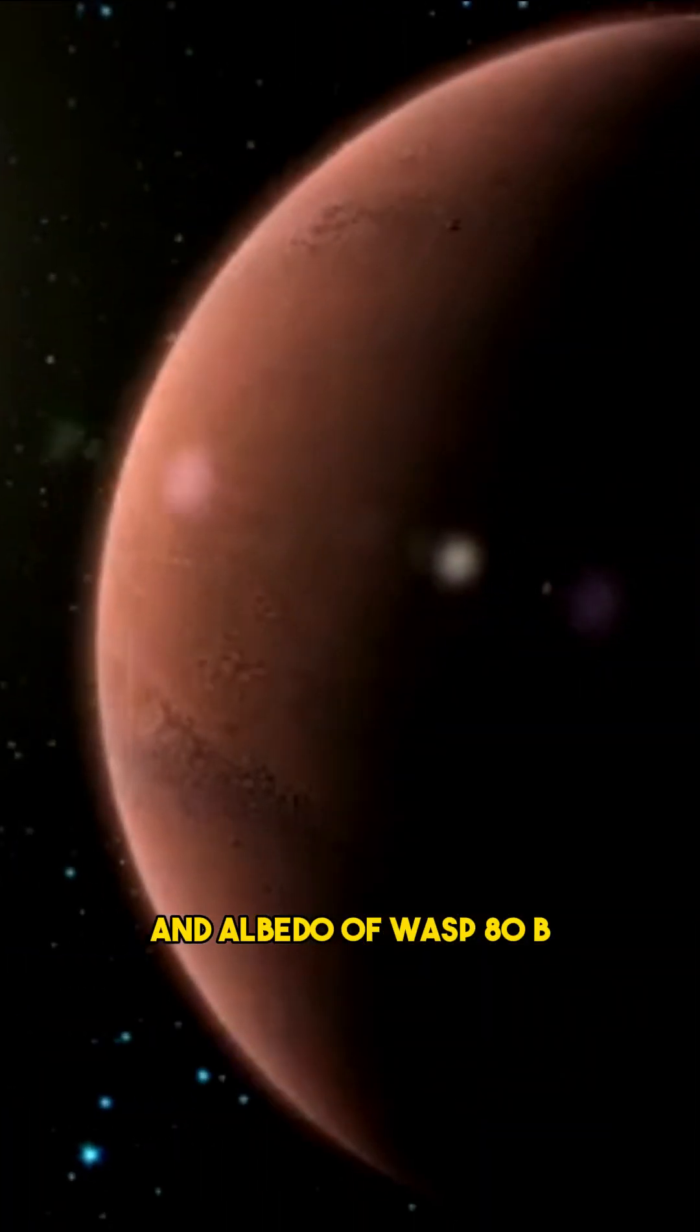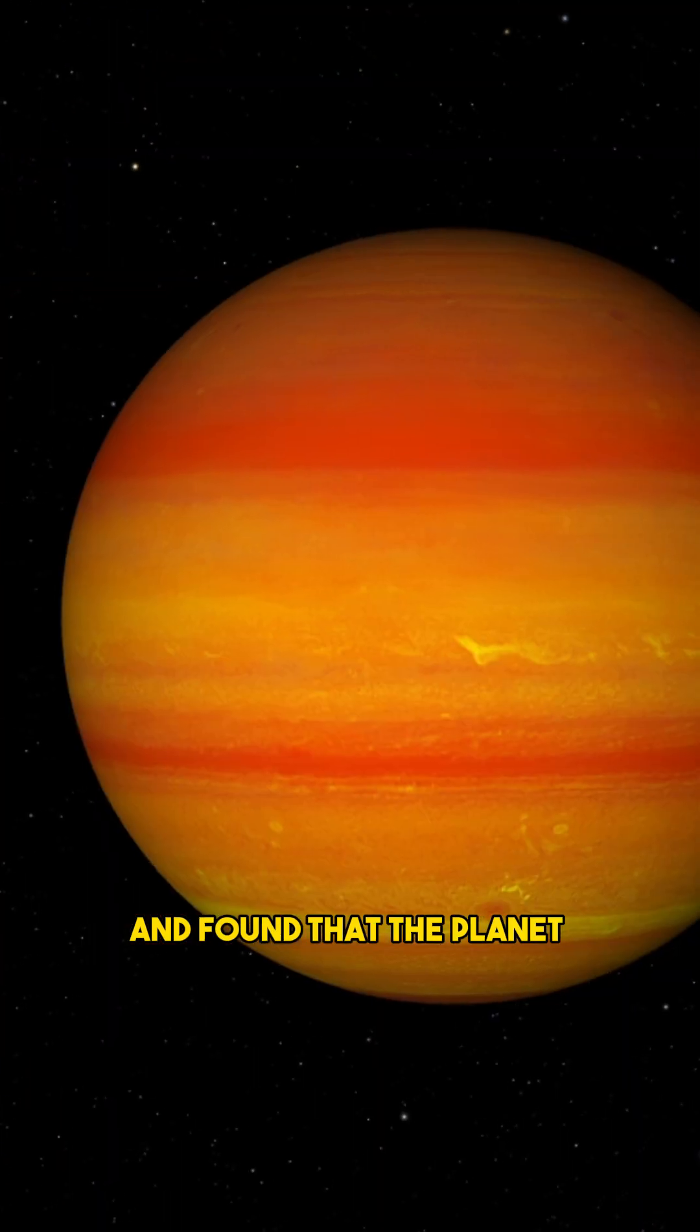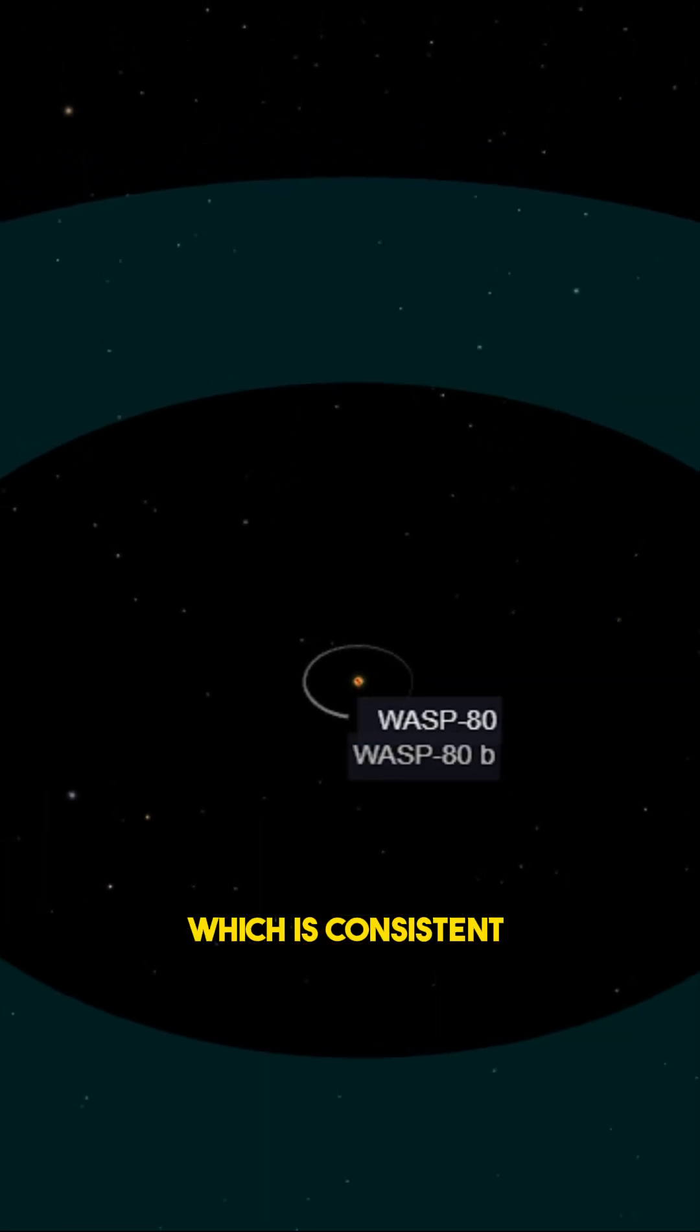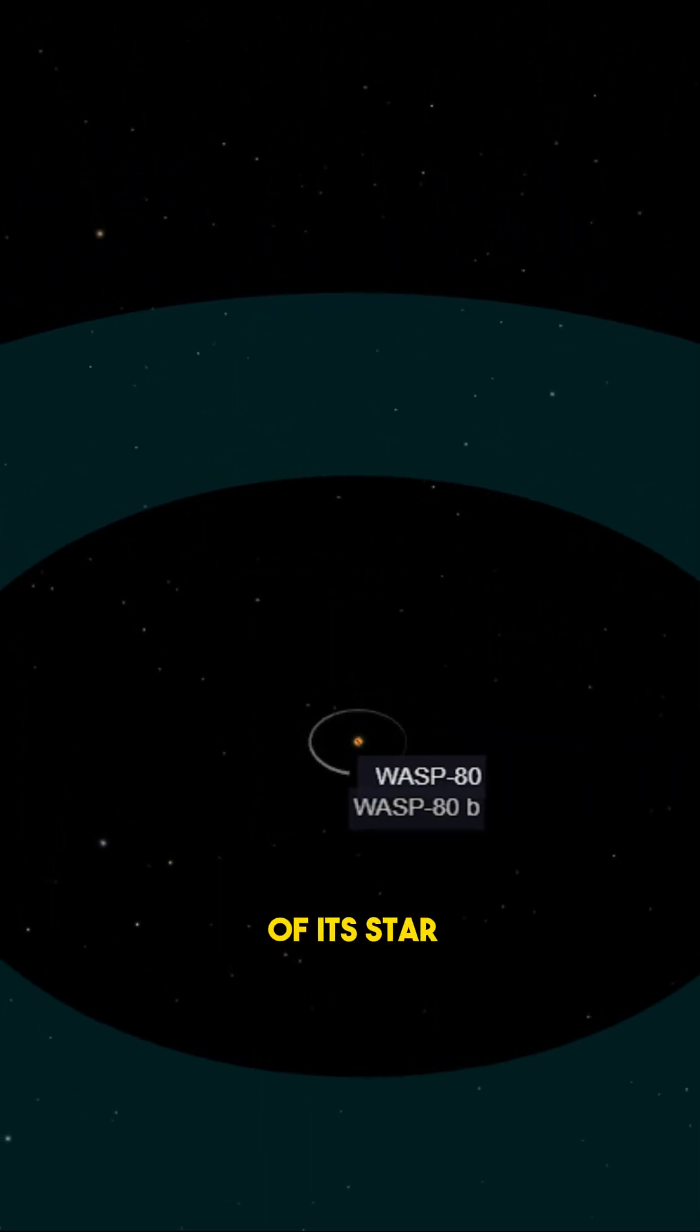Webb also measured the temperature and albedo of WASP-80b, and found that the planet is relatively cool and dark for a hot Jupiter, which is consistent with its location in the habitable zone of its star.